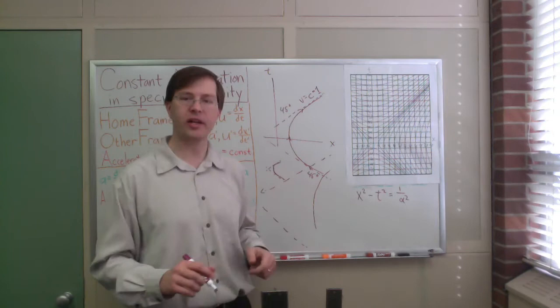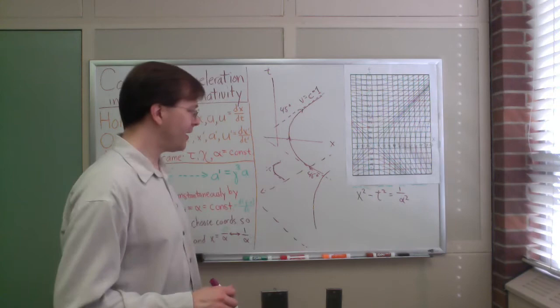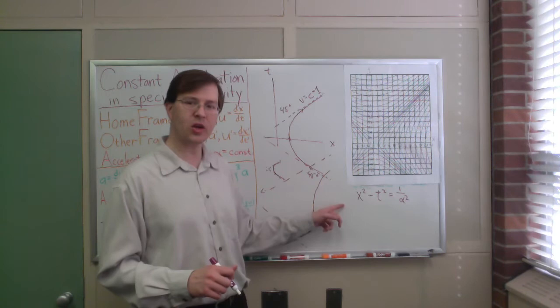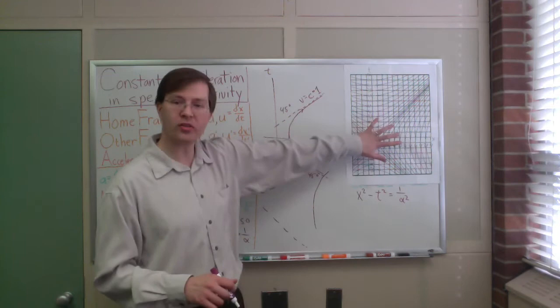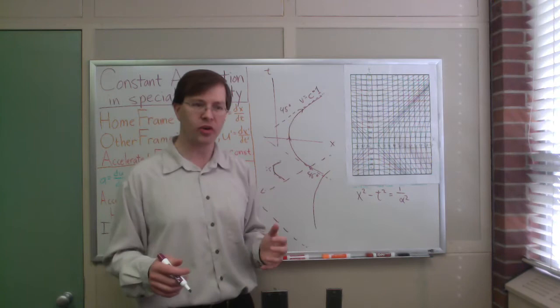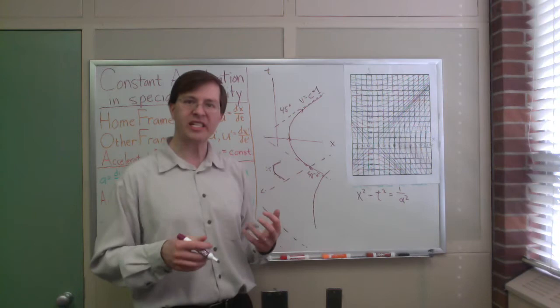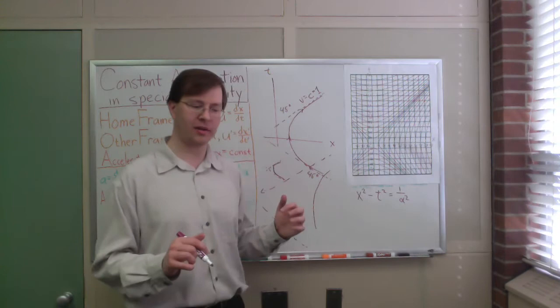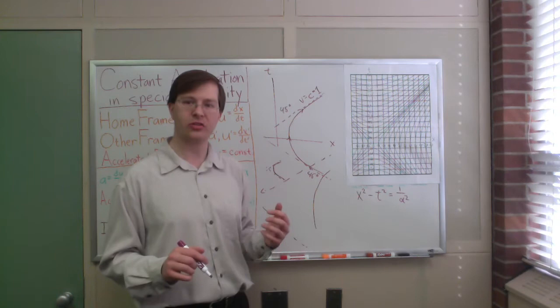This is actually kind of cool, because if you look at this, this is the equation for a hyperbola. In fact, it's an equation for the same kinds of hyperbolas that reflect the structure of space and time — the hyperbola paper we've been using every time we've done spacetime diagrams. In other words, constant acceleration in relativity looks for all the world like it is tracing out the structure of spacetime.